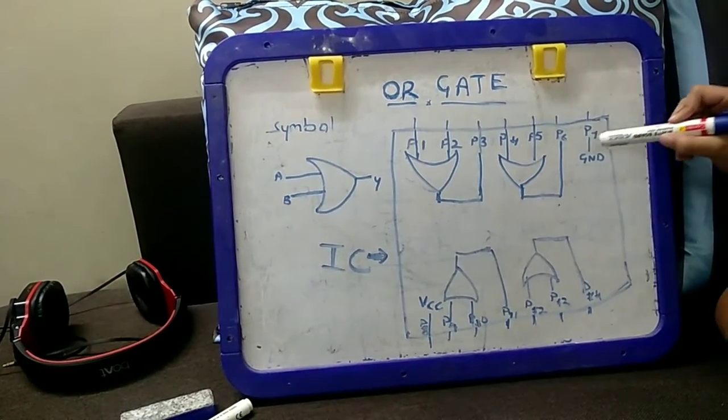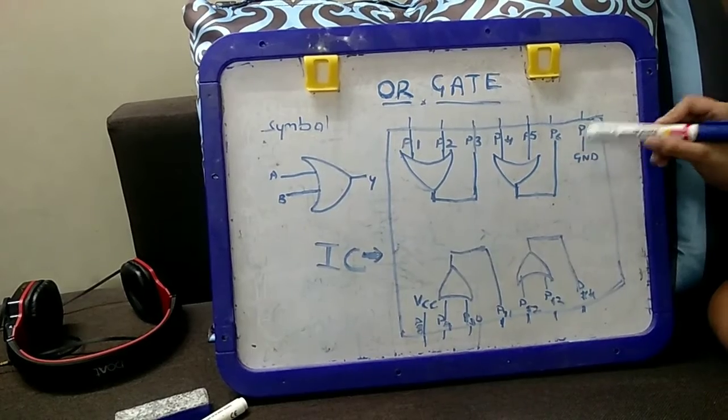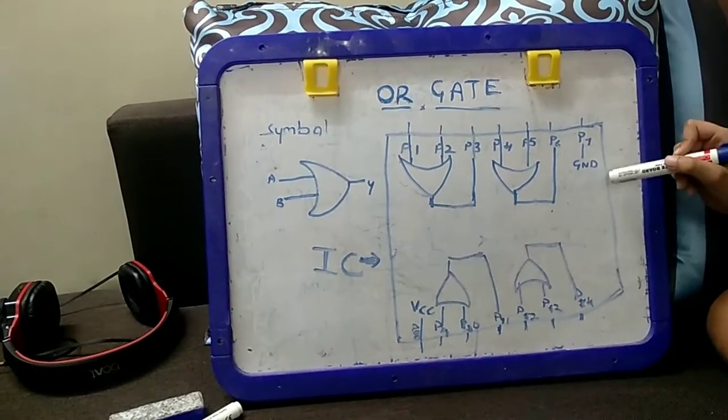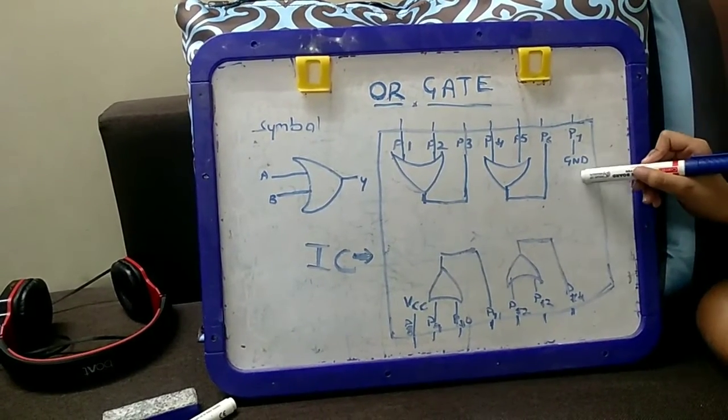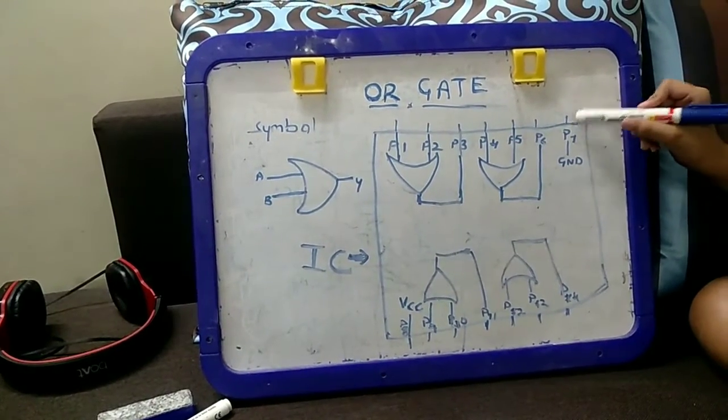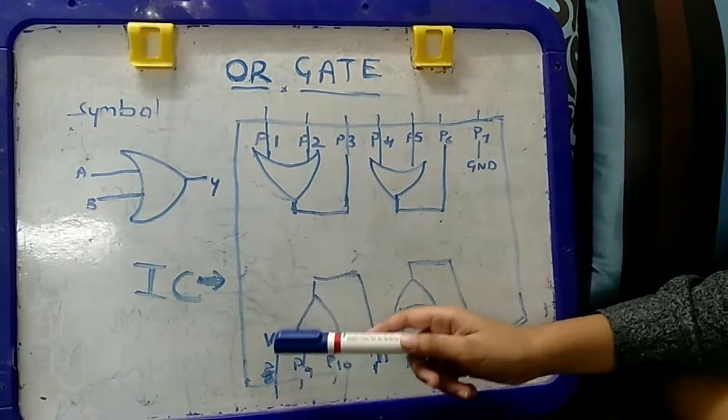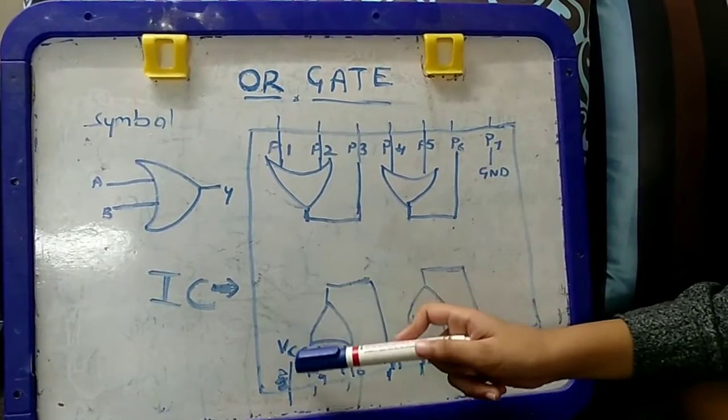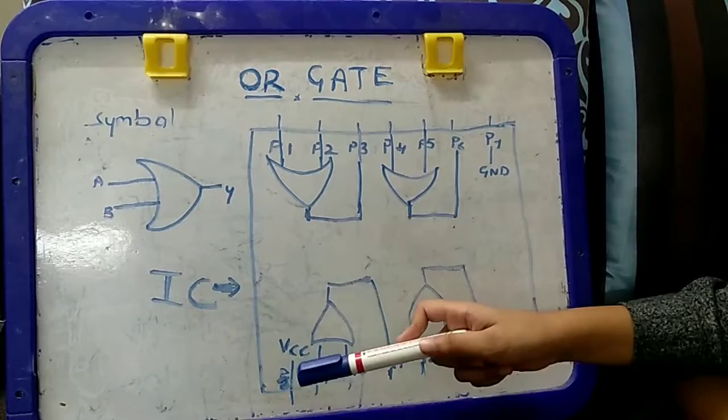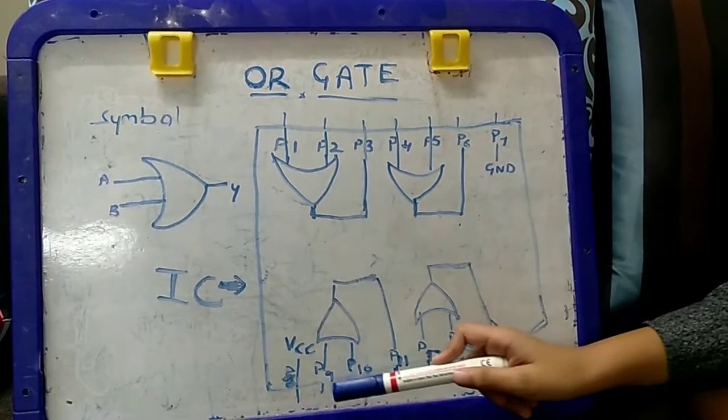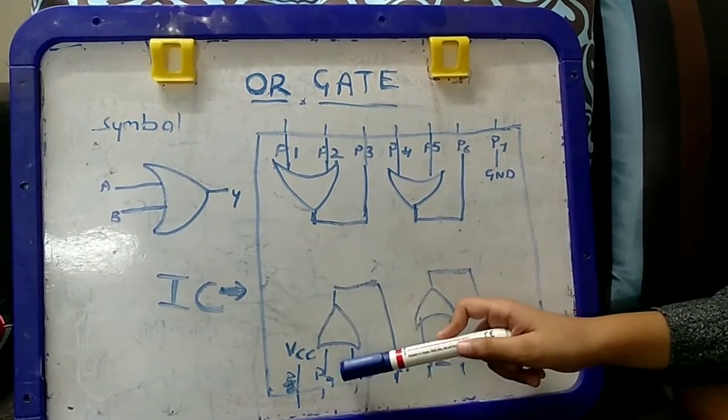Second OR gate output pin is connected to pin 6 and pin 7 is GND, means we have to connect the negative terminal of the battery. This is pin 8 VCC pin. We have to connect VCC to the battery plus terminal.